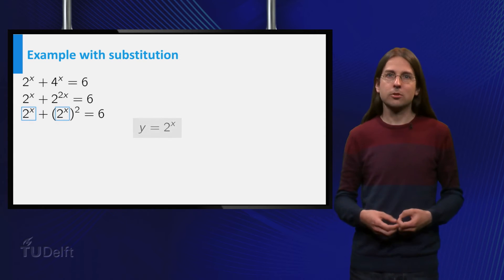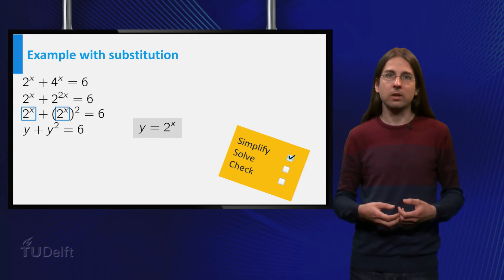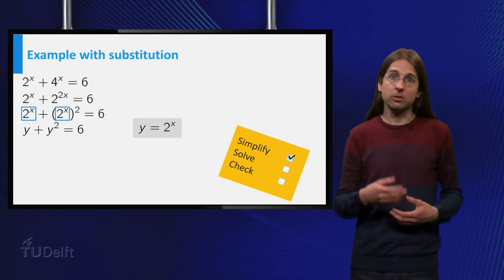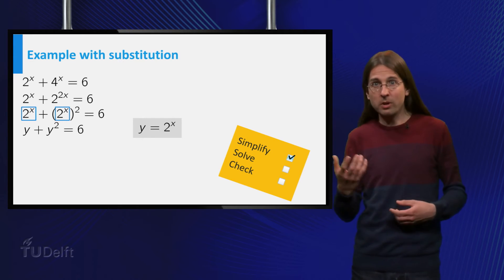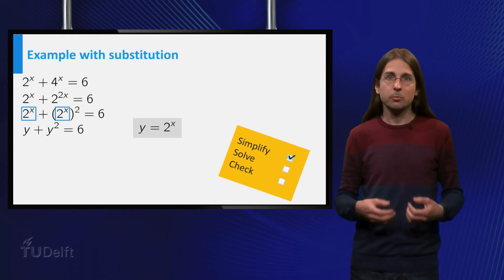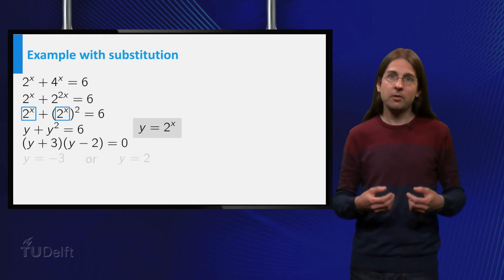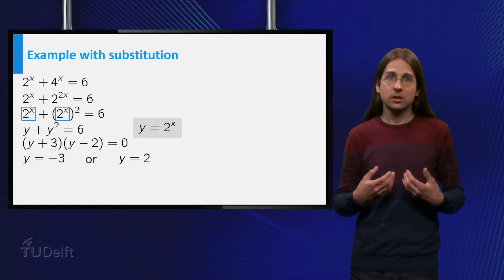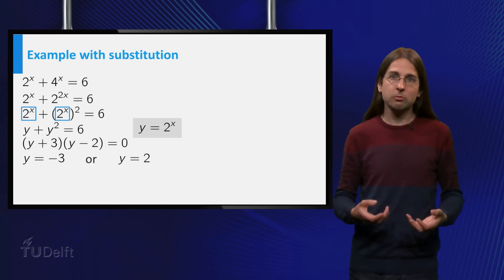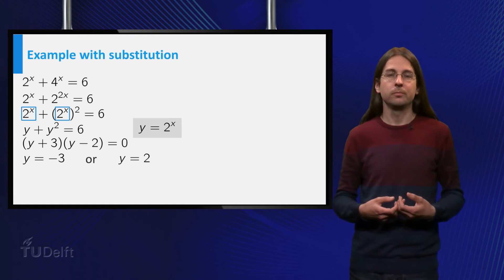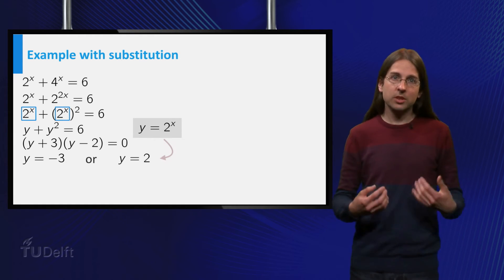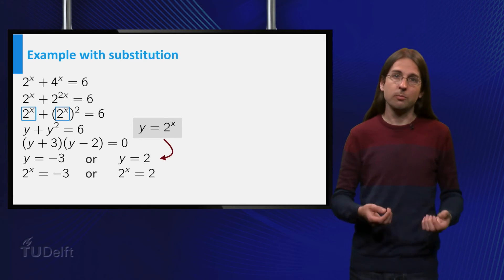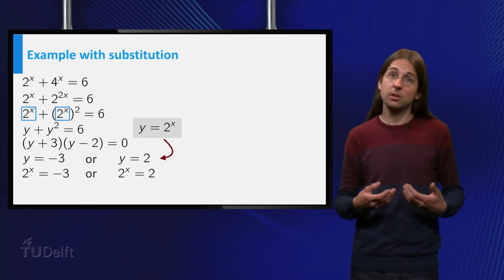Now, we substitute y = 2^x and use 2^(2x) = (2^x)² to obtain y + y² = 6. Simplifying gives (y+3)(y-2) = 0, thus the solutions are y = -3 and y = 2. To obtain x, we must solve 2^x = -3 and 2^x = 2.